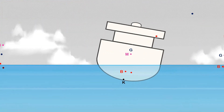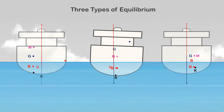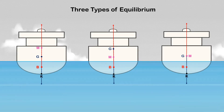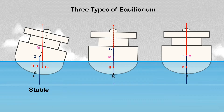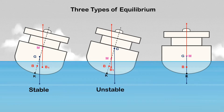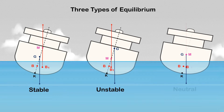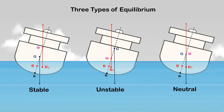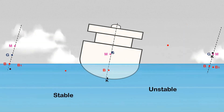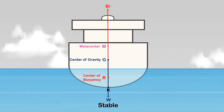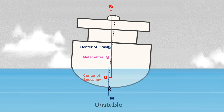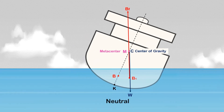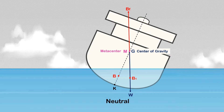In my previous video, I have shown various stability conditions of ships: stable, unstable, and neutral conditions. In this video, I will show you the effect of unstable conditions on ship stability, leading to a neutral state, which will result in one of the dangerous scenarios in ship stability — the angle of loll.